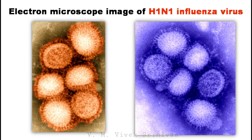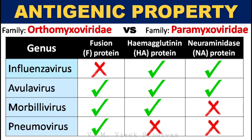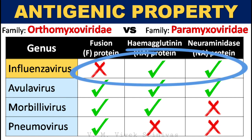The picture shown here is an electron microscope image of an influenza virus. Antigenic property: in contrast with the family Paramyxoviridae viruses, the influenza virus does not possess fusion protein. It possesses only hemagglutinin and neuraminidase.